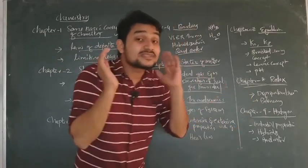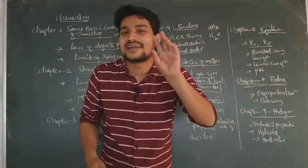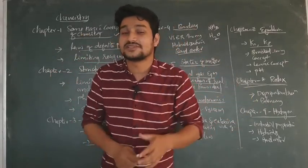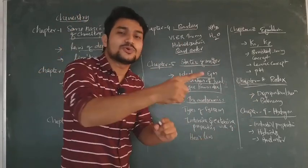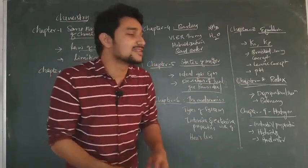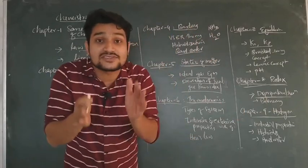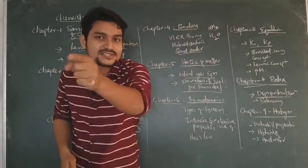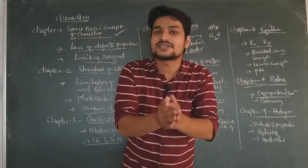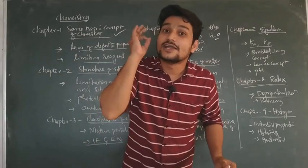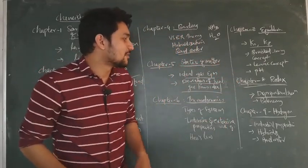The next chapter is redox reactions. You will learn the types of redox reactions, including disproportionation reactions with examples. Then balancing of redox reactions by the oxidation number method.